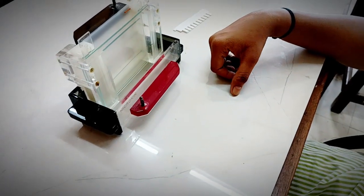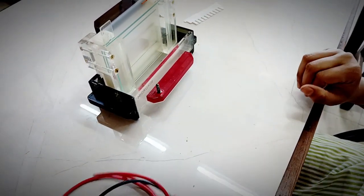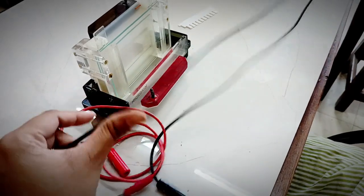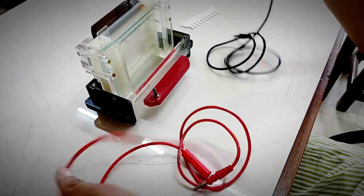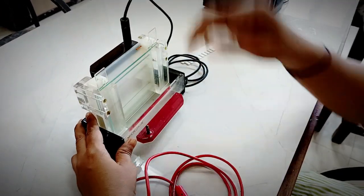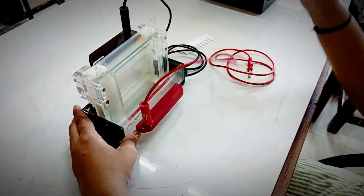And finally, once your setup is done, you are going to give the electric supply using the electrodes like black to black and red to red.